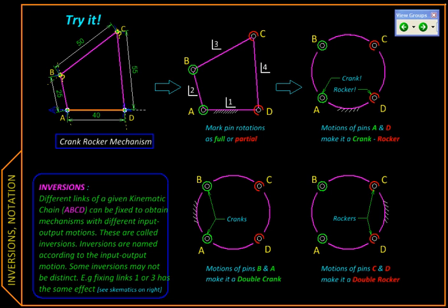Often the purpose of a mechanism is to transfer or transform a given input motion into a desired output motion. If we start with a four-bar linkage like this with given link lengths, then potentially we can fix any of these four links to derive four different four-bar mechanisms. This process is called inversion.